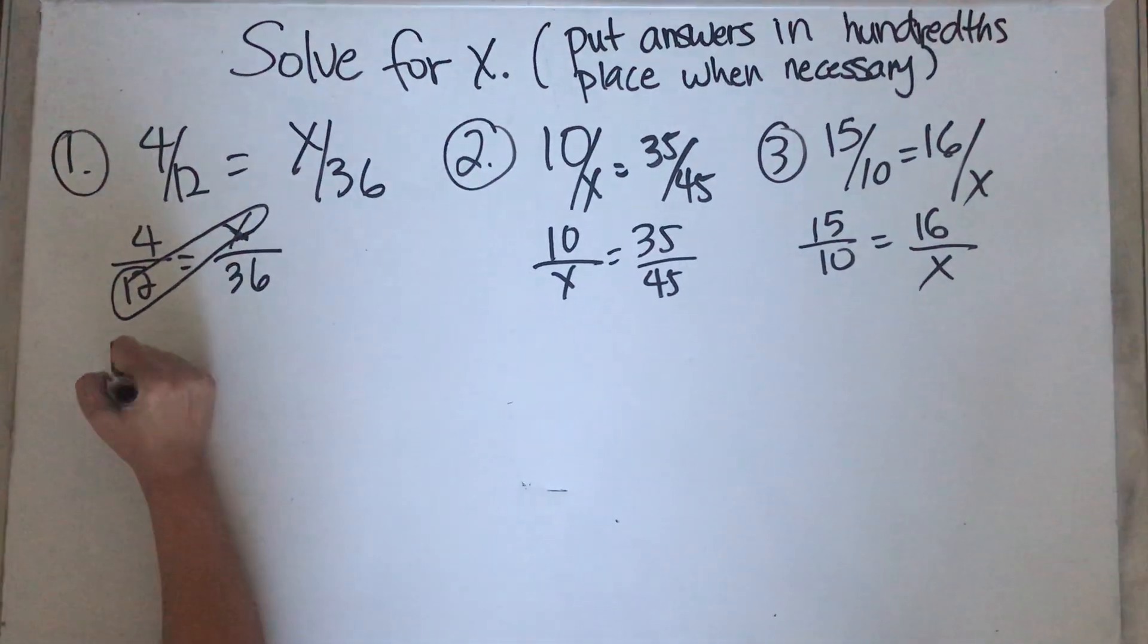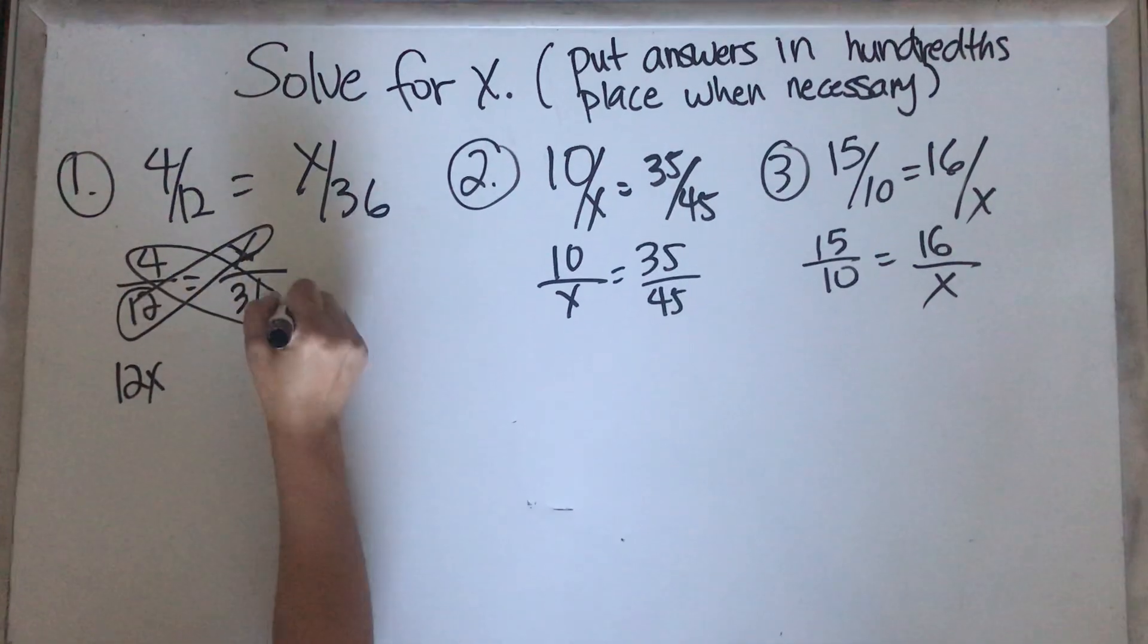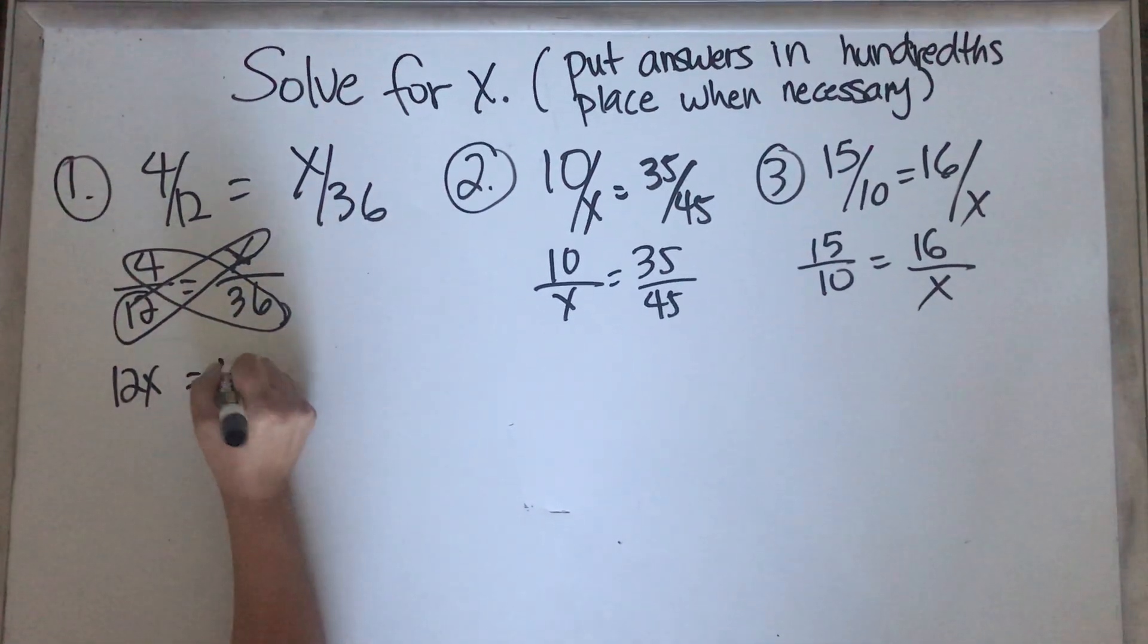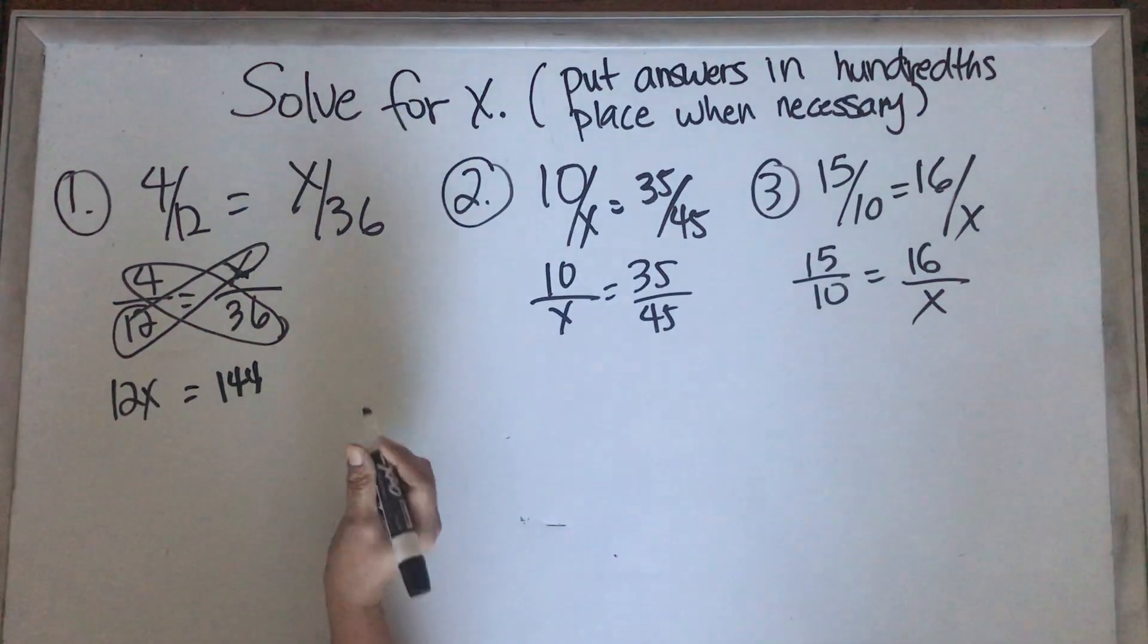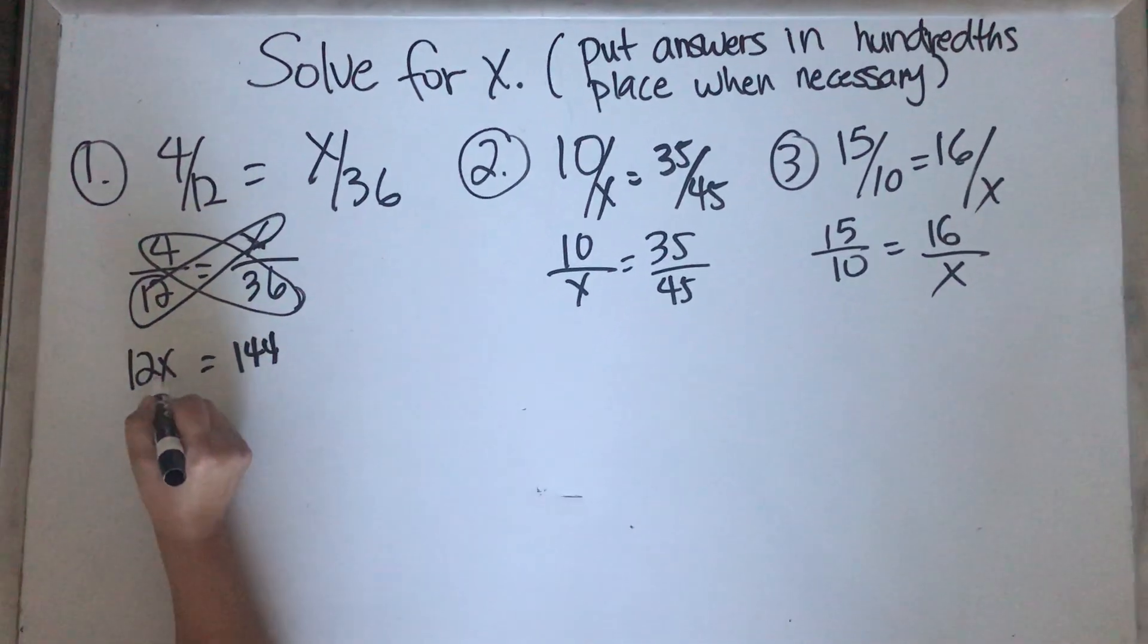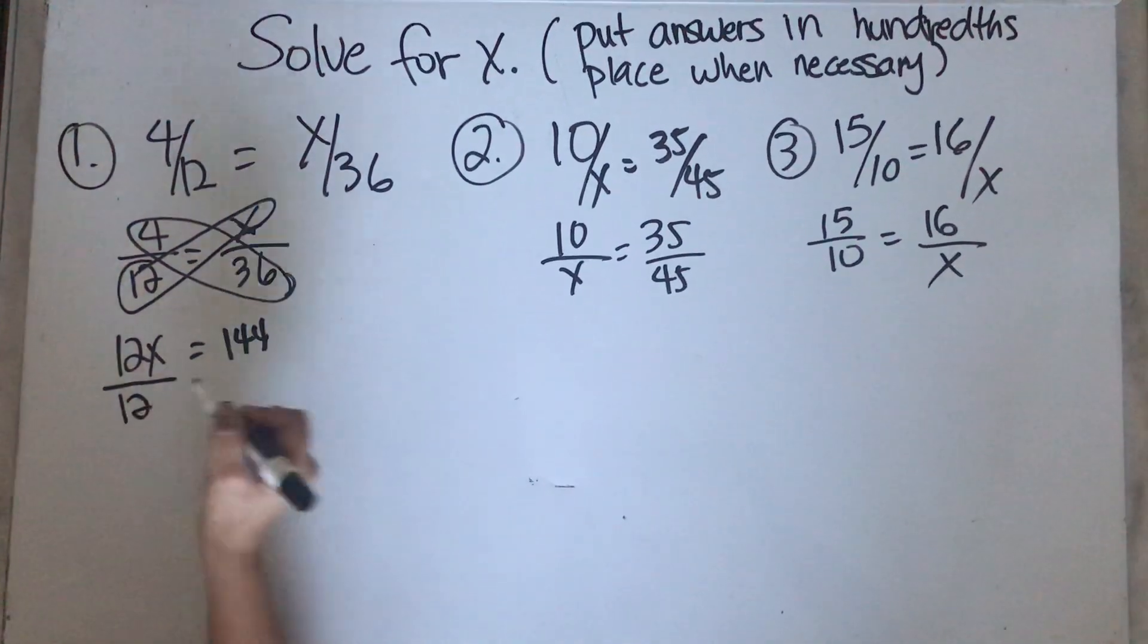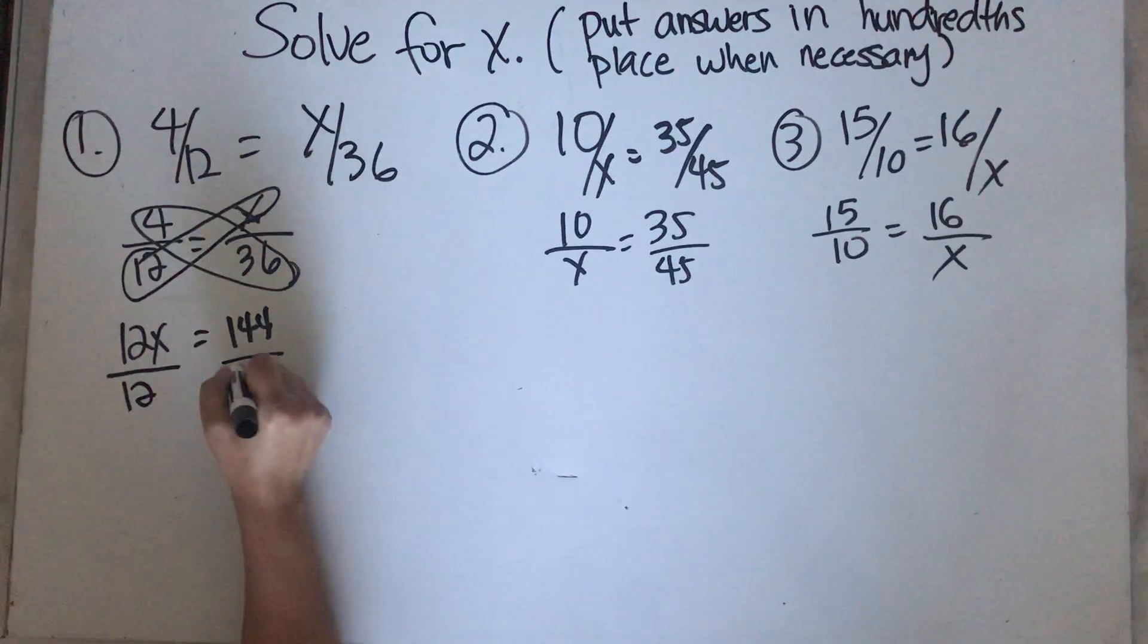12 times x is 12x. 36 times 4 is 144. So to get x by itself, you have to divide it by that number next to the x. So we're going to divide that by 12. If you do it in this side, you have to do it on this side.